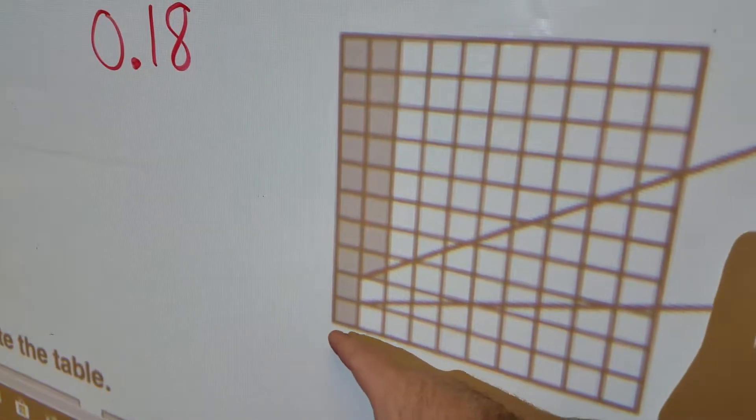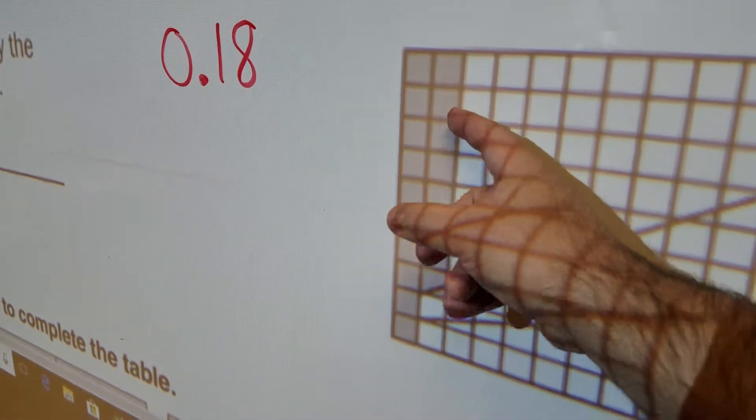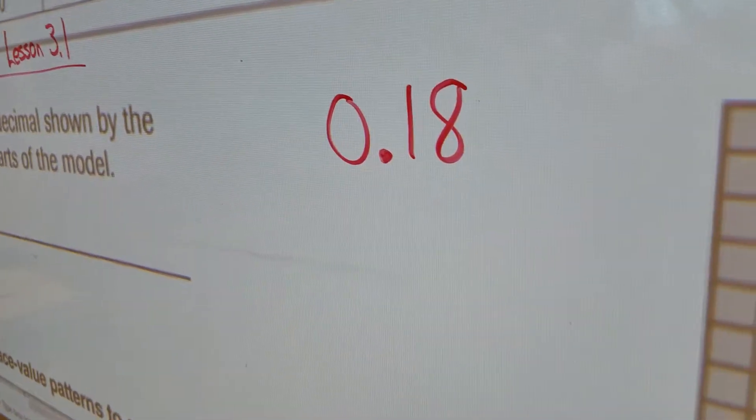And hey, check it out. If I were to actually count these, 1, 2, 3, 4, 5, 6, 7, 8, 10, 11, 12, 13, 14, 15, 16, 17, 18 little squares, 18 hundredths. Yeah, that's perfect.